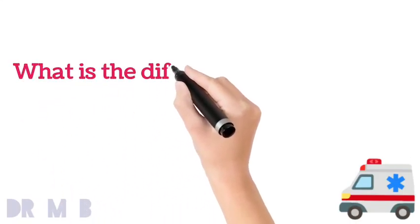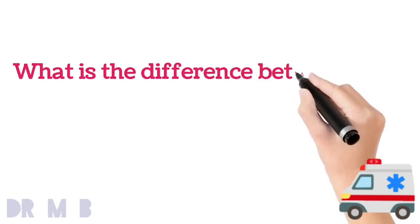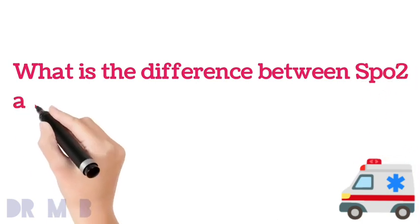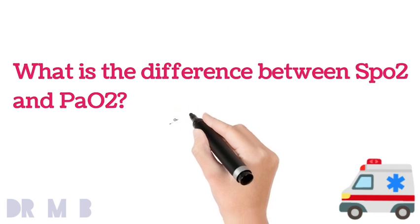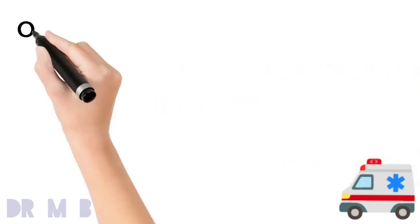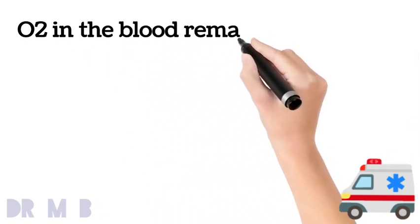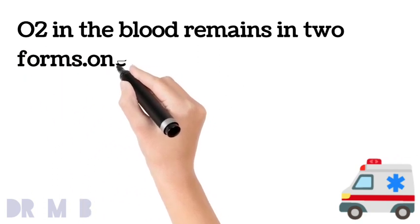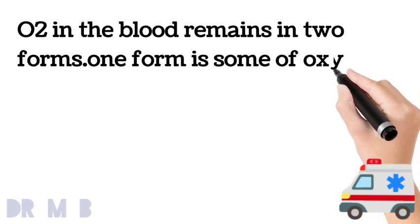Bismillahirrahmanirrahim, assalamualaikum. Hi everyone, today I would like to talk about what is the difference between SpO2 and PaO2 oxygen. Oxygen in blood remains in two forms: one is the dissolved form and the other form is saturated form.